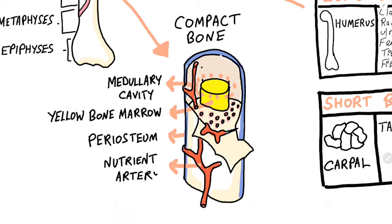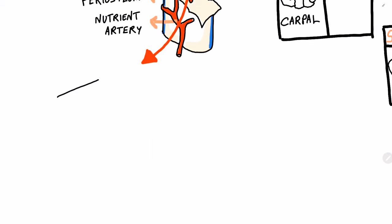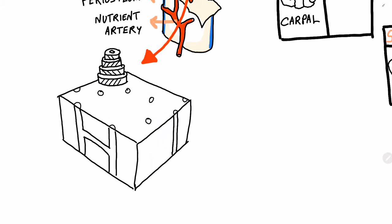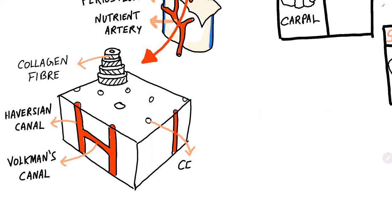Now let us observe the compact bone in detail. The compact bone is covered by the periosteum. Compact bone has cylindrical units known as osteons. Compact bone contains collagen fibers that provide the bone with tensile strength. The osteons are supplied by blood through the Haversian canal and Volkmann's canal. These canals house the branches of the nutrient artery. The Haversian canal is also known as the central canal.